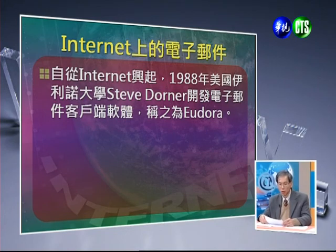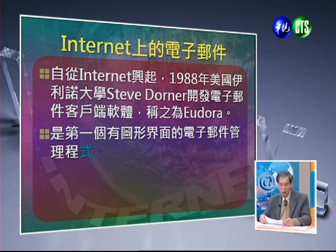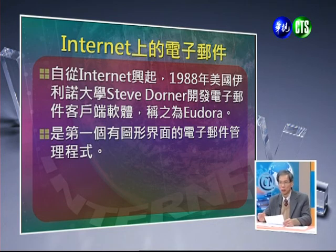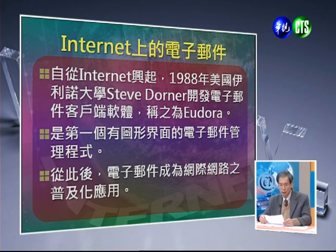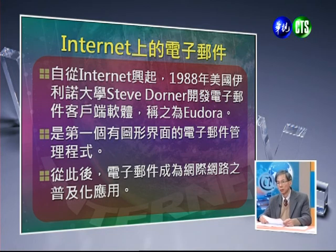自从Internet兴起之后，1988年美国Illinois大学的Steven Donner开发了电子邮件的客户端软体，当时称为Eudora。Eudora是第一个有图形界面的电子邮件管理程式，从文字化进到图形化，使用起来比较简便，逐渐在Internet上普及并广泛流传。